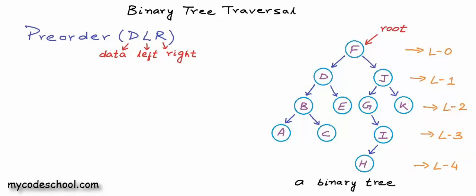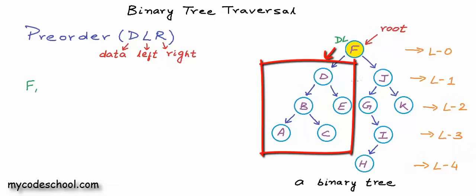Let's first see what will be the pre-order traversal for this binary tree. We start at the root node, and for each node we first read the data — so I'm writing F. Now I need to go left and finish the complete left subtree; only once all nodes in the left subtree are visited can I go to the right subtree. The problem reduces in a self-similar or recursive manner. Now we focus on the left subtree and are at D, root of this left subtree of F. For this node we first read the data, then go left. We go towards E only when nodes A, B, and C are done.